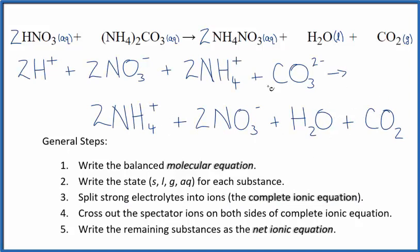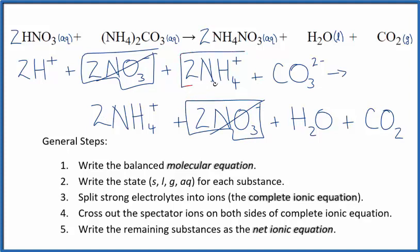So once we have this complete ionic equation, we cross out spectator ions that are on both sides of the complete ionic equation. In the reactants up here, two nitrate ions. In the products down here, two nitrate ions. These are spectator ions. Cross those out. Two ammonium ions and two ammonium ions here in the products. Cross those out.